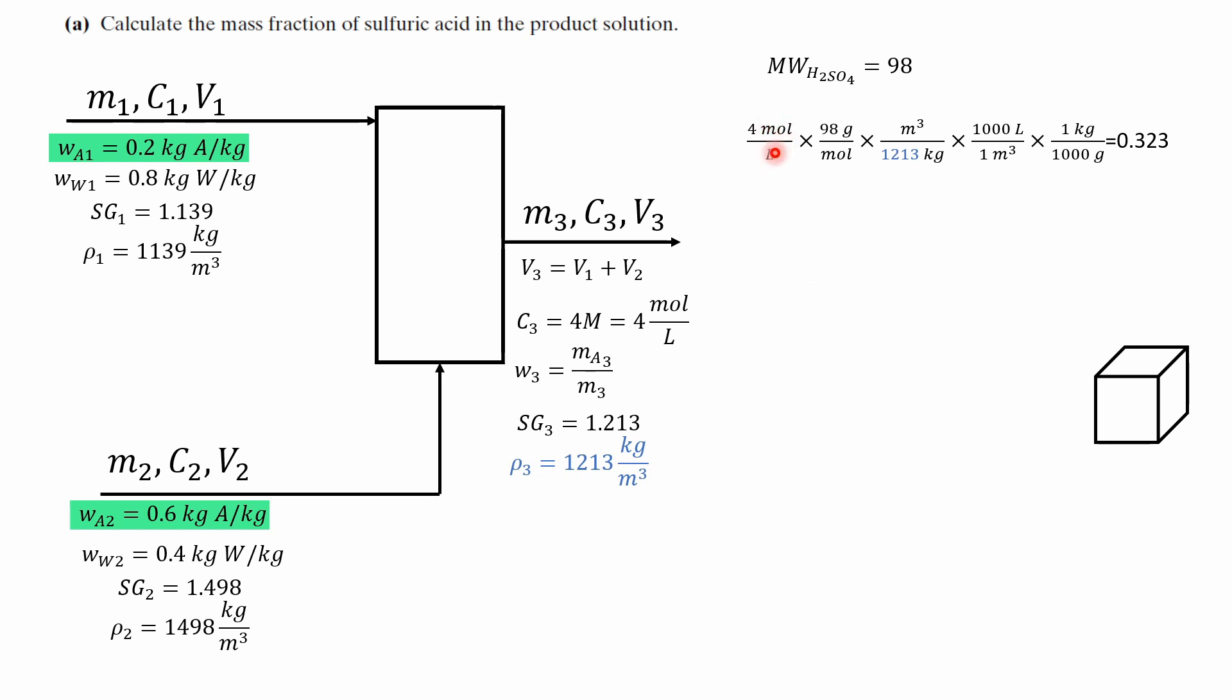Now for this part of the solution we have the concentration which is 4 molar, the molecular weight of sulfuric acid to cancel out moles and convert to grams, and using density and some unit conversions we actually solve for the mass fraction of the product stream. Now be careful with this math and I really hope you understand how we got this because we're going to use this exact value for the rest of the problem.